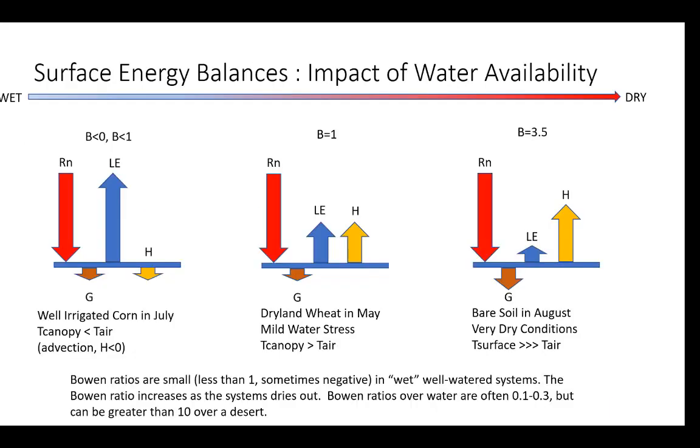So again, sort of getting towards summary of this is that we have, the surface energy balances are strongly affected by water availability. So remember that when it's wet, the Bowen ratio is less than one, or sometimes can be negative. When it's dry, the Bowen ratio will get very large. If you went out to a desert and took Bowen ratio data, your Bowen ratio might be 10, for example. So you can use this Bowen ratio as sort of an indicator of the status of your system in terms of water availability and water stress.